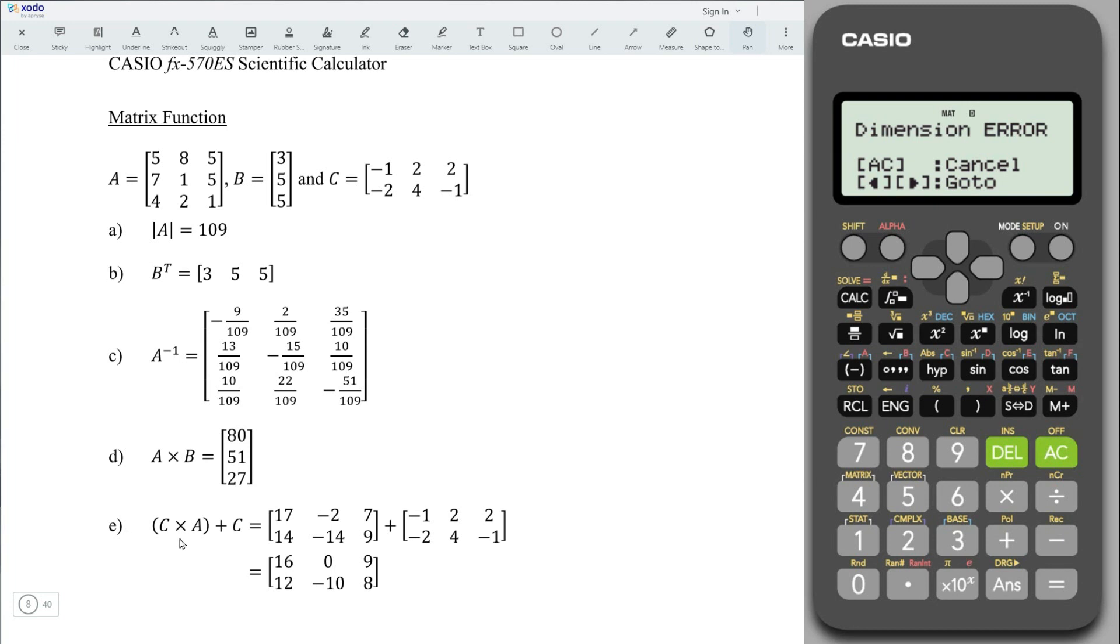For the last example of this video, matrix C multiply matrix A plus matrix C. We can calculate one by one. Firstly, we have matrix C. Shift 4, 5 to get matrix C. Multiply shift 4, 3 to get matrix A. Press equal. And we should obtain the calculations for the first term. And now, press shift 4. Look for the matrix answer, which is 6. And we plus shift 4. The next term is matrix C. Select 5 and press equal. And we should obtain the correct answer.